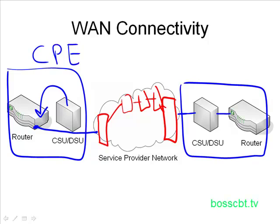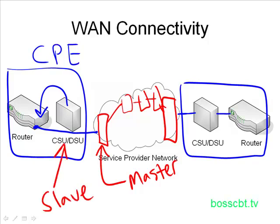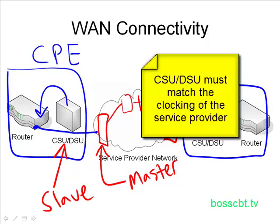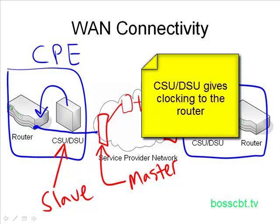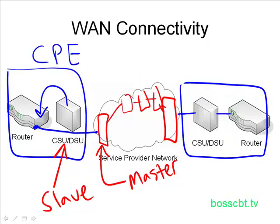The telco provider on the WAN switch sets the clocking, and the CSU-DSU is responsible for matching it. You can think of the service provider as the master and the CSU-DSU as the slave — the CSU-DSU has to match the master. It's not the other way around; we don't negotiate it. They tell us what it's going to be, and we need to make sure our equipment is properly configured. If the CSU-DSU is properly configured, it communicates to the router, and the router knows when to send and when to expect to receive data based on the clocking.